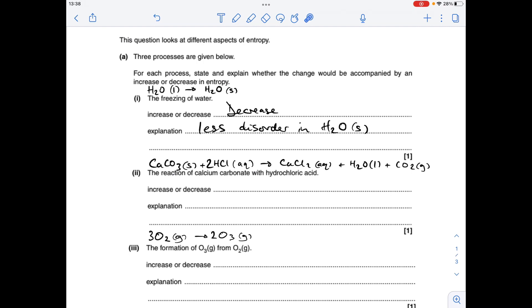The reaction of calcium carbonate with hydrochloric acid, the key thing here is the fact that we're producing gas. So there's an increase in entropy because there's a lot of disorder in a gas.